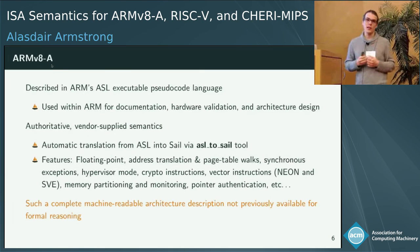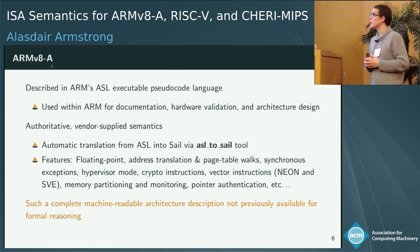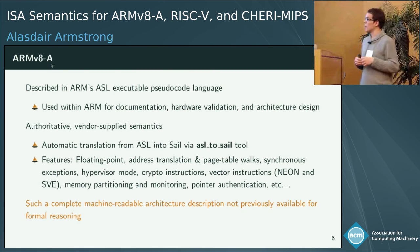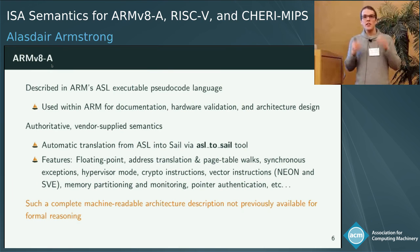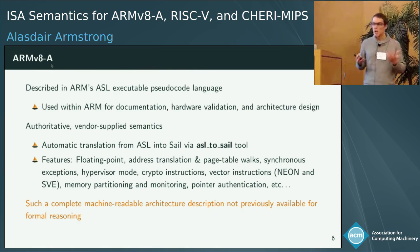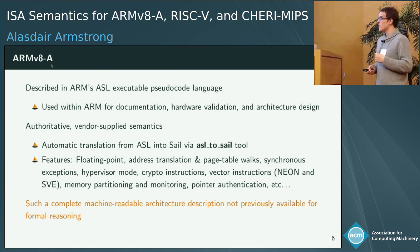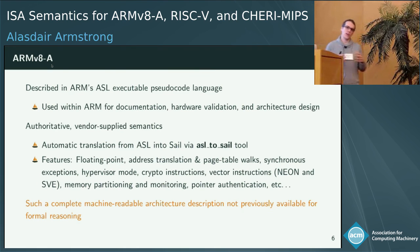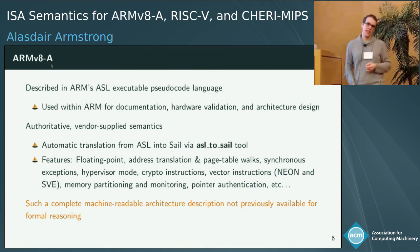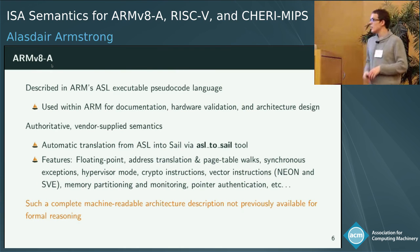We also have smaller handwritten models for RISC-V, MIPS, and CHERI-MIPS. Those models are also complete enough — they have enough privileged architectural features that they can boot operating systems and allow reasoning about system-level features. Our ARM model is described using ASL, ARM's executable pseudocode language, which ARM uses for documentation, hardware validation, and architectural design. What's exciting is that this is an authoritative, vendor-supplied semantics — something the formal methods community hasn't really had before. We have a tool called ASL2SAIL which translates this ASL into SAIL.